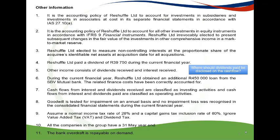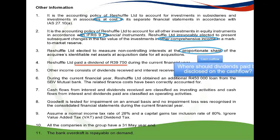Additional information in this scenario is very important. Information regarding the measurement of NCI was given, as well as the policy of the parent to measure investments in subsidiaries and IFRS 9 financial assets. Reshuffle paid a dividend during the current year — this is a cash outflow. The information specifically states that dividends paid and interest paid should be disclosed under operating activities, and that dividends and interest received should be disclosed under investing activities. Additionally, an extra loan was obtained during the current year, which is a cash inflow to be disclosed under financing activities.